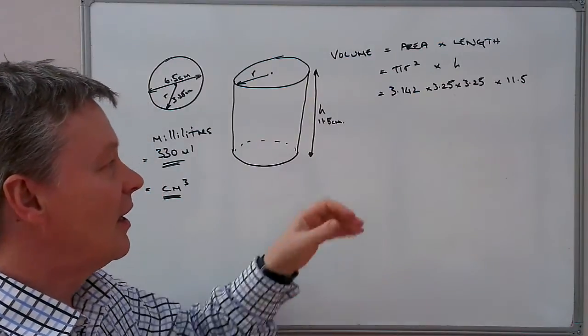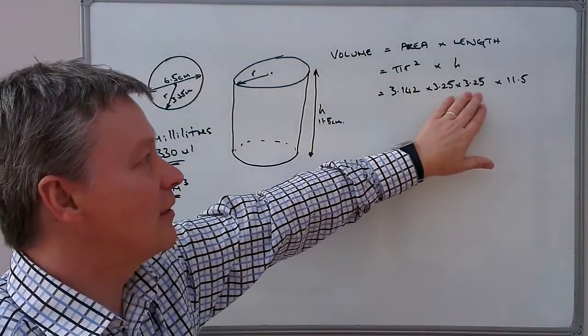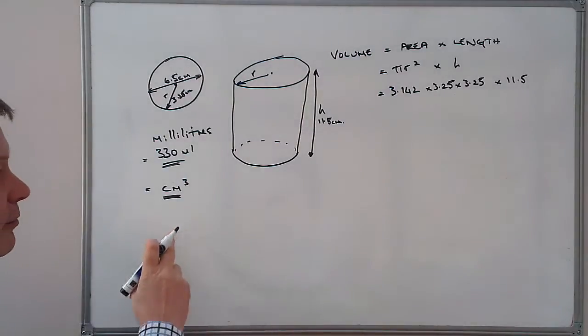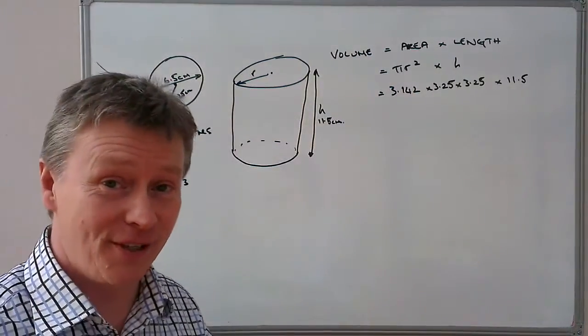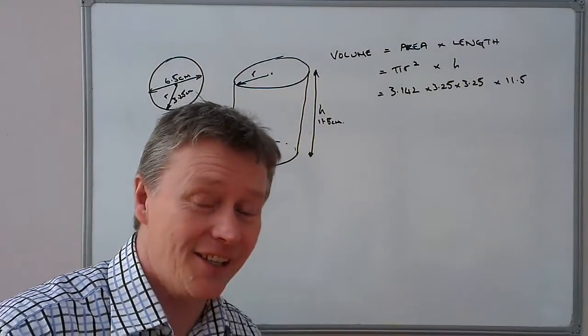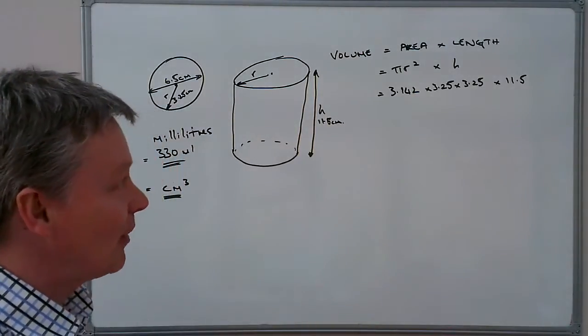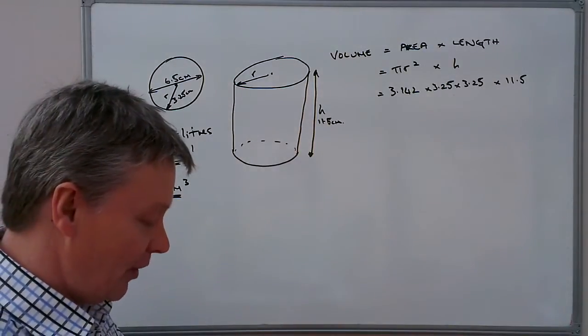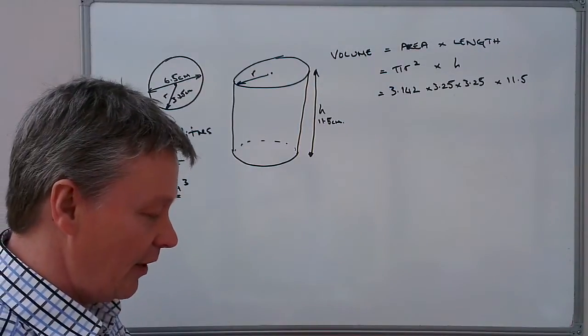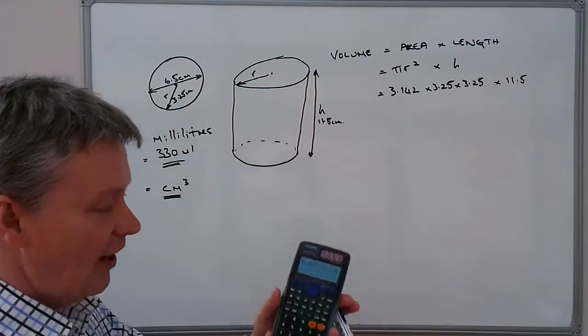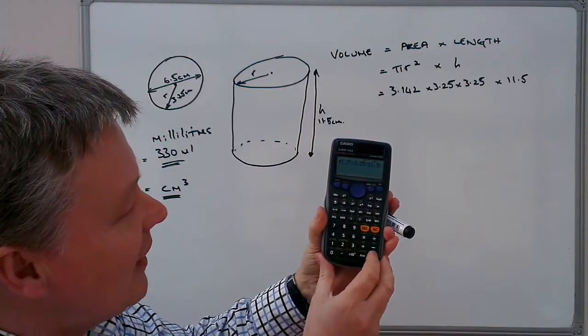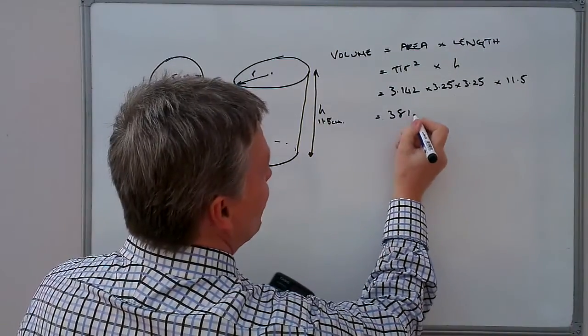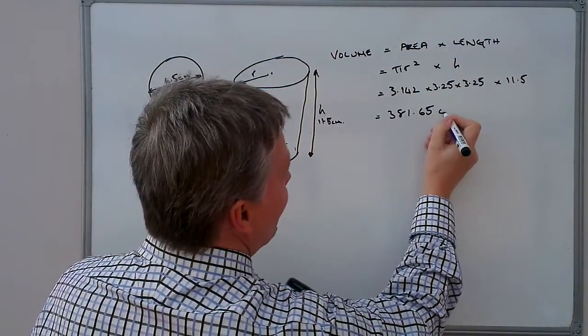So if our calculations are correct, 3.142 times 3.25 times 3.25 times 11.5 should give us a centimeters cube value of around about 330 milliliters. I hope that's the case. And I am actually going to do this on my calculator. So I'm going to use 3.142 multiplied by 3.25 multiplied by 3.25 multiplied by 11.5. Now, hopefully you can see that on the video. And if I press the equal sign, that's going to give me 381.65. 381.65 centimeters cubed.